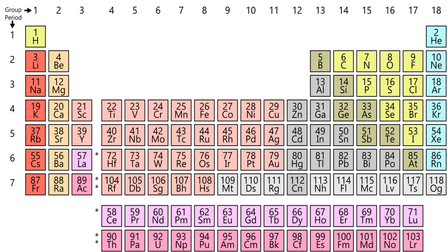Chemically, the noble gases have relatively high ionization energies, negative electron affinities, and relatively high electronegativities. Compounds of the noble gases number less than half a thousand, with most of these occurring via oxygen or fluorine combining with either krypton, xenon, or radon. The status of the period seven congener of the noble gases, oganesson (Og), is not known.